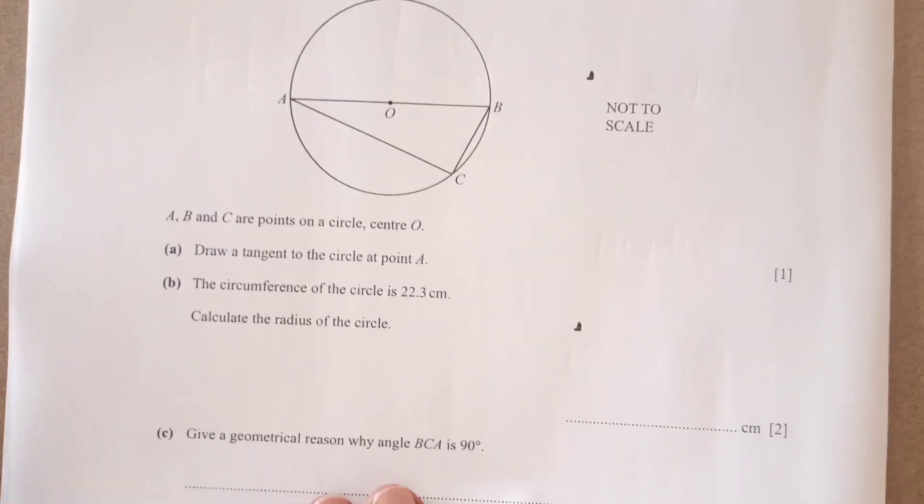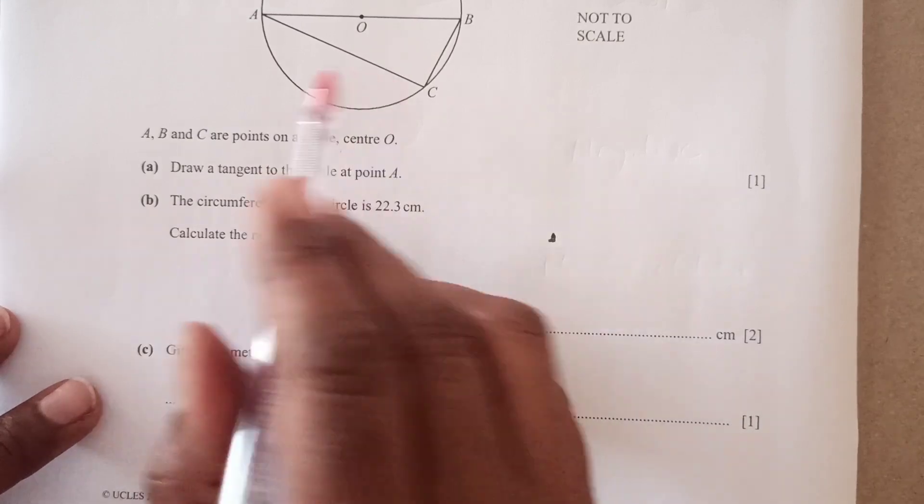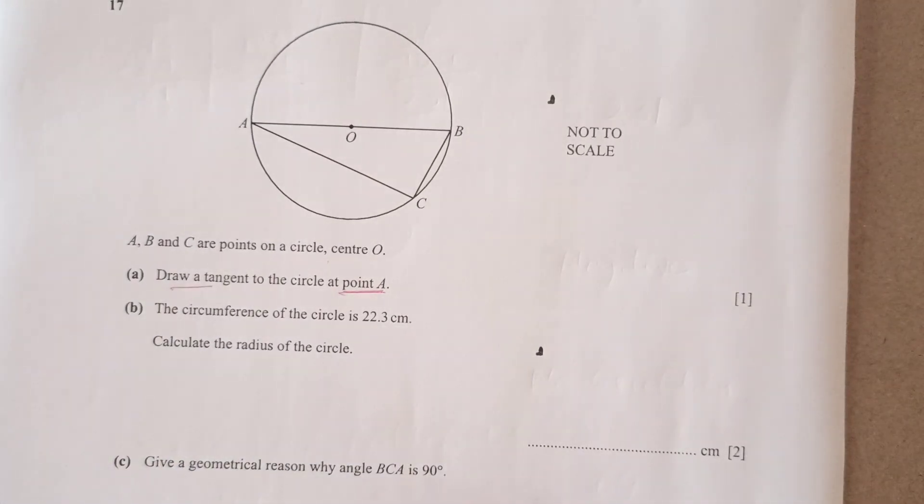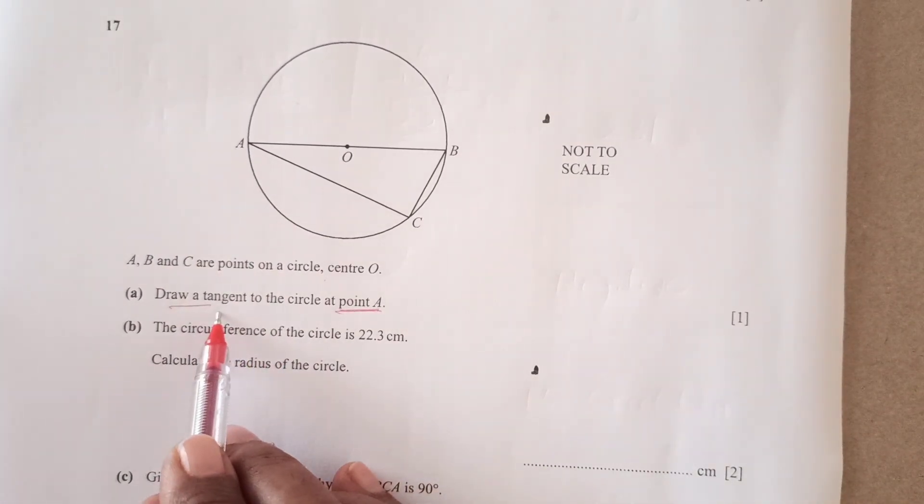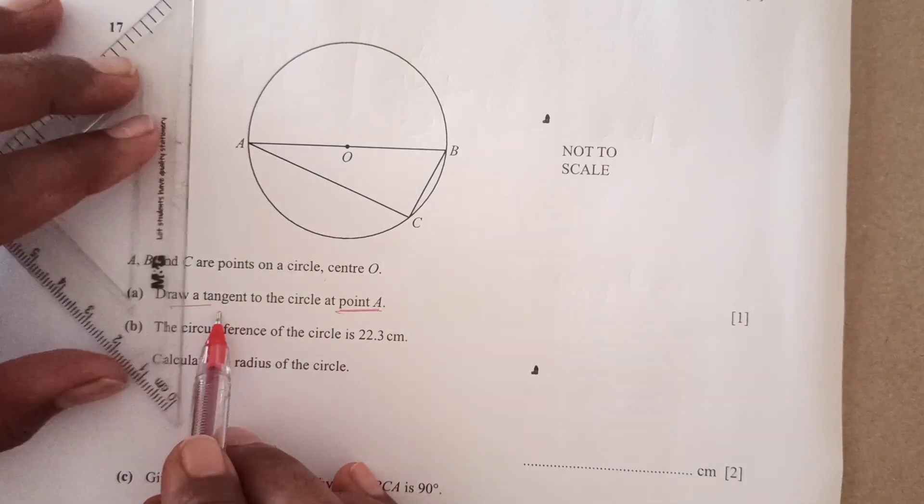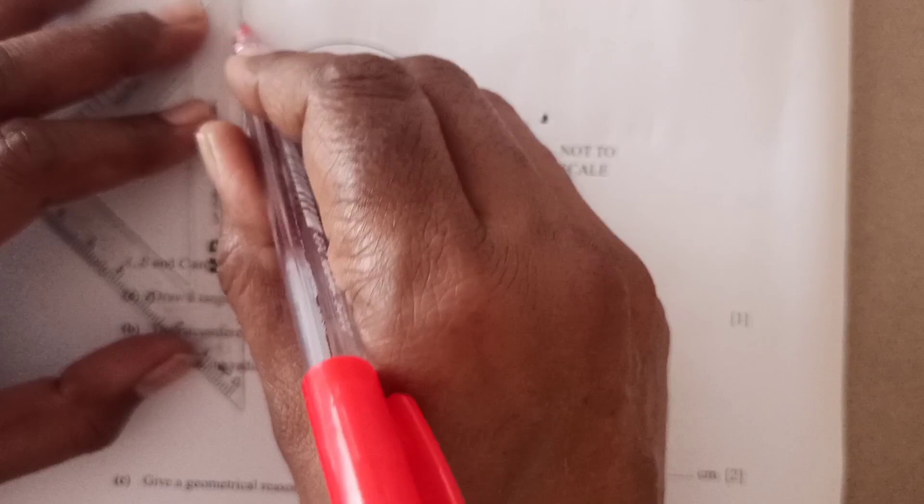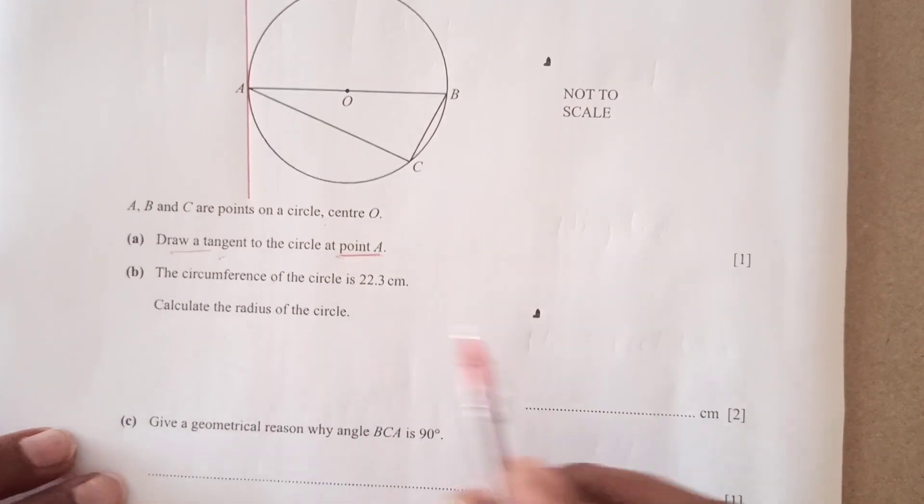Now number 17, ABC are the points on a circle, ABC. Draw a tangent to the circle at point A. Now, first of all, you need to know what is a tangent. Tangent is a line that touches only at one point to the circle. So at point A. So we are just going to draw a line that just touches the circle at A, like this, right? So that's first part.